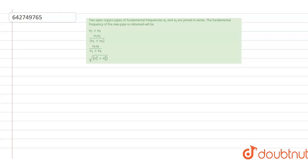The question says that two open organ pipes of fundamental frequencies ν1 and ν2 are joined in series. The fundamental frequency of the new pipe so obtained will be, the given options are ν1 + ν2,